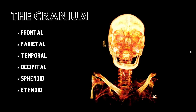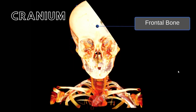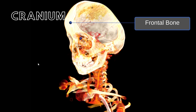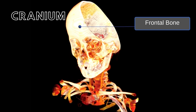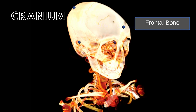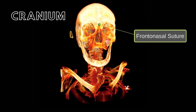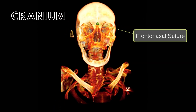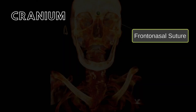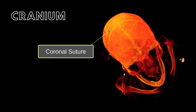Let's take a closer look at each of these bones and the sutures that connect them. The frontal bone stretches from your eyebrows to a bit past your hairline, making up the top part of your eye cavity and the front of your head. The frontonasal suture joins the frontal bone with the superior aspects of the nasal bones. The coronal suture joins the frontal bone posteriorly with the two parietal bones.